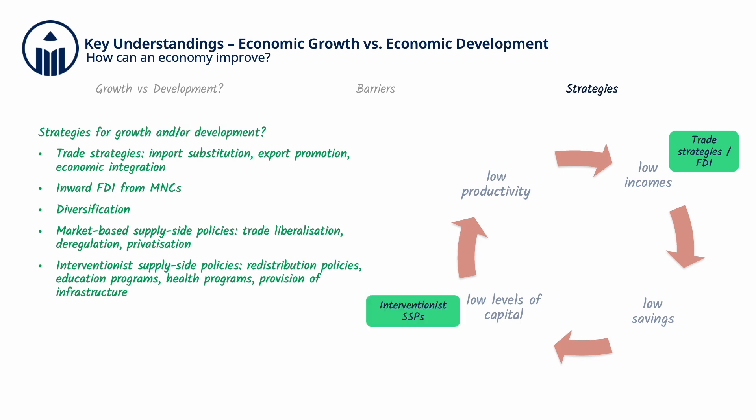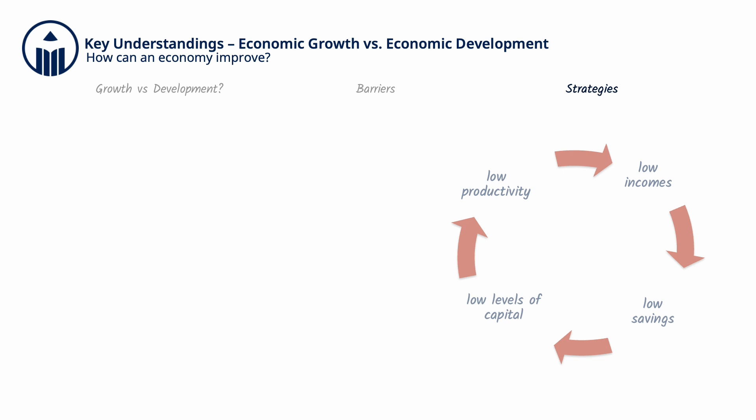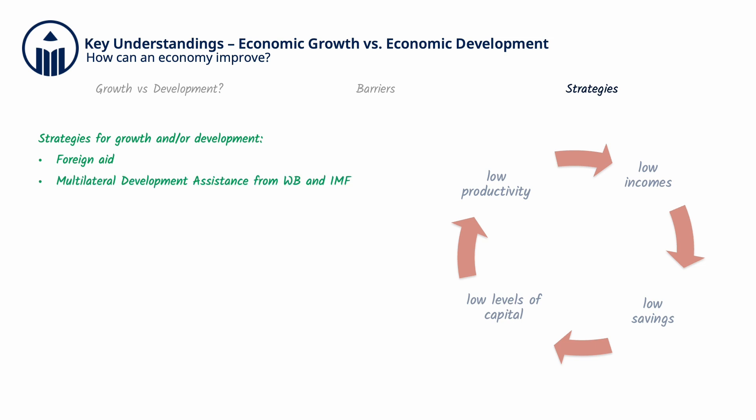Interventionist policies improve the country's physical and human capital, and so can help break the low levels of capital part of the poverty cycle. Governments can also seek and accept foreign aid from MEDCs, though foreign aid can sometimes be tied to conditions that may not necessarily be favorable to development goals. Seeking multilateral development assistance from institutions like the World Bank and the International Monetary Fund is also a strategy to overcome lack of funds for pursuing pro-growth and pro-development goals, though the conditions attached to such assistance play a key role in their effectiveness, or lack thereof. Both foreign aid and multilateral development assistance can help break the low-income part of the poverty cycle.